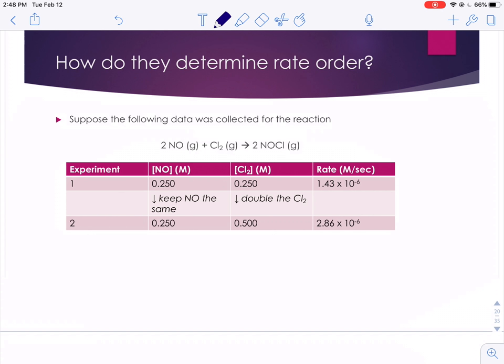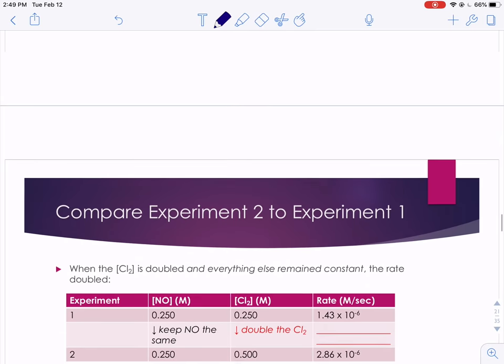And what you're going to look for in these reactions are things that are staying the same and things that are changing. So when you look at experiment 1 versus experiment 2, and we look at the concentrations of our nitrogen monoxide and our chlorine, we're going to keep the concentration of nitrogen monoxide the same in both trials. The thing that's different about trial 1 versus trial 2 is the concentration of our chlorine. We're doubling the concentration of the chlorine.